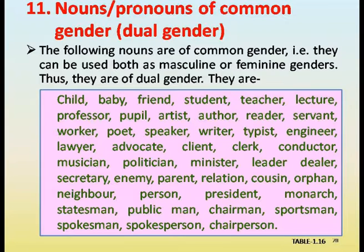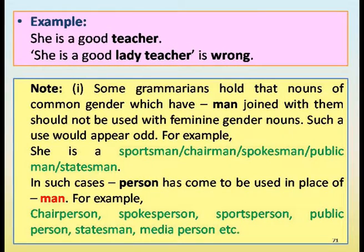More common gender nouns: monarch, statesman, public man, chairman, sportsman, spokesman, spokesperson, chairperson. Example: 'She is a good teacher' is correct; 'She is a good lady teacher' is wrong. Note: some grammarians hold that nouns with 'man' joined should not be used with feminine gender. In such cases, 'person' has come to be used in place of 'man': chairperson, spokesperson, sportsperson, public person, media person, etc.